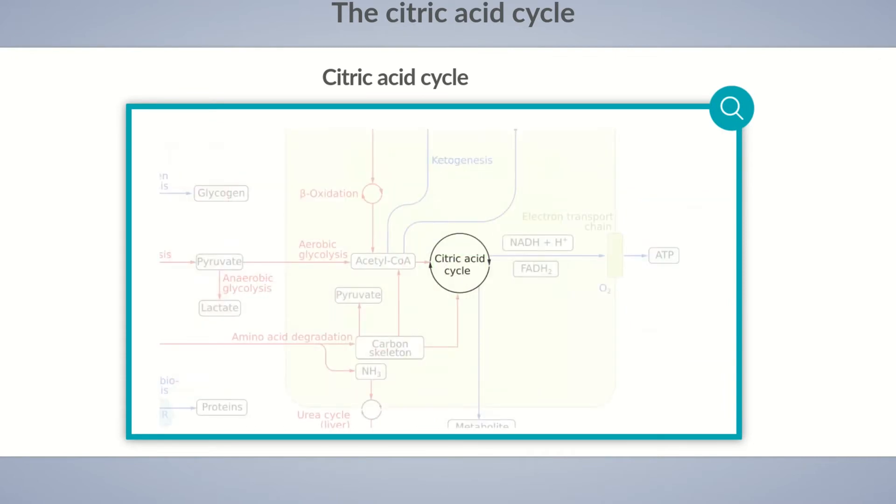In energy metabolism, the main function of the citric acid cycle is to generate reducing equivalents that can be converted to ATP in the electron transport chain.